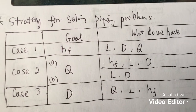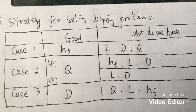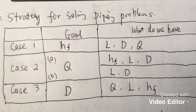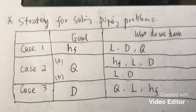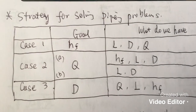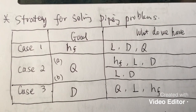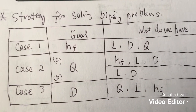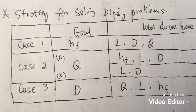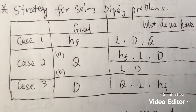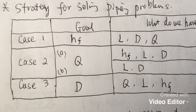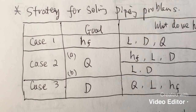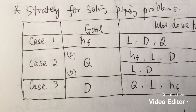Case one is the most straightforward. The goal is to find the frictional head loss HF, with knowledge of the pipe length L, diameter D, and flow rate Q. If you know L, D, and Q, you can calculate HF using the Darcy-Weisbach equation: HF equals F times L over D times V squared over 2g. You know everything except F, so you use the Moody diagram bottom axis — because you know the flow rate, velocity, diameter, and viscosity — to find the Reynolds number, then find F, and calculate the loss.